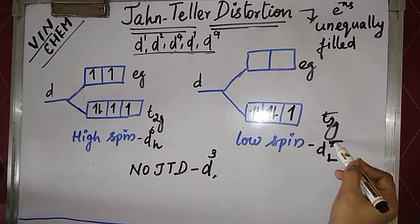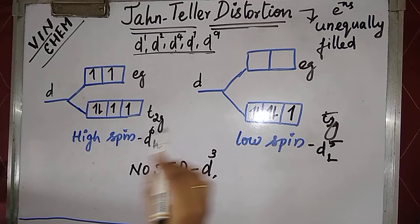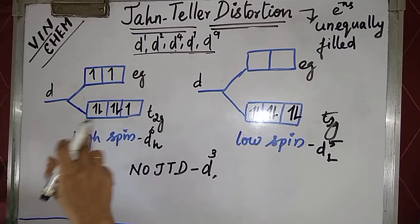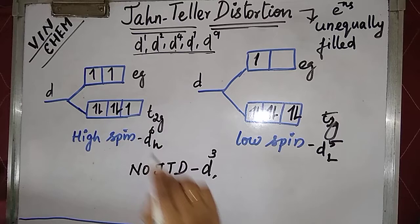Keep this in mind. d5 is a low spin case, and d6 is a high spin case. Moving to d7: for d7, distortion is there — unequally filled, mentioned here. And here also, distortion is there — unequally filled. So irrespective of low and high spin, distortion is present for d7.